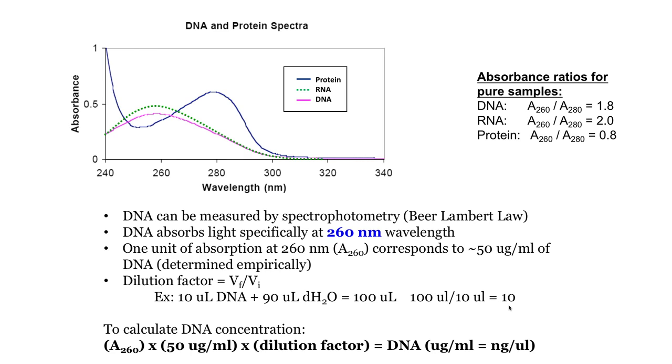So to determine our concentration, we take the absorbance at 260, we multiply it by 50, and then multiply it by our dilution factor to end up with the final concentration of our DNA. So by measuring the absorbance of our sample at 260 and 280, we can get both the concentration and the purity of our sample.